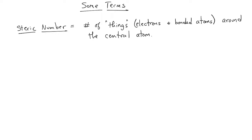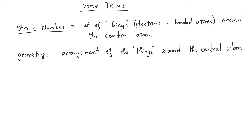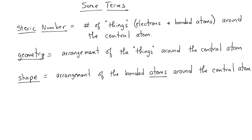First, the steric number — this is the number of things, that is, electrons and bonded atoms, around the central atom. Next, the geometry is referred to as the arrangement of the things around the central atom. The shape, sometimes called the molecular shape, is the arrangement of the bonded atoms around the central atom.